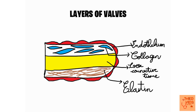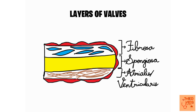The valves are lined by a cardiac endothelial lining. Beyond that, there are three main histological layers: the first, at the top, is rich in collagenous fibers; the middle layer is full of loose connective tissue and proteoglycans; and the third layer is rich in elastin. These layers have specific names — the collagen-rich layer is called the fibrosa, the loose connective tissue layer is called the spongiosa, and the elastin-rich layer is called the atrialis or ventricularis, depending on which side it faces.